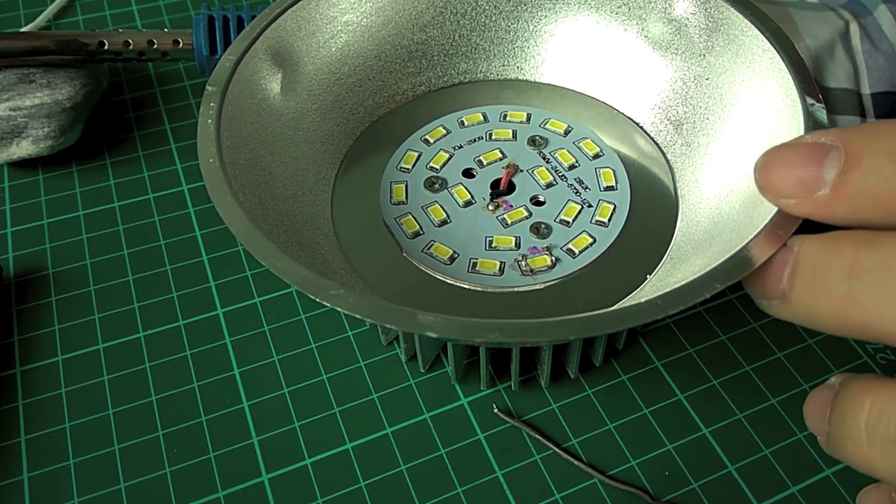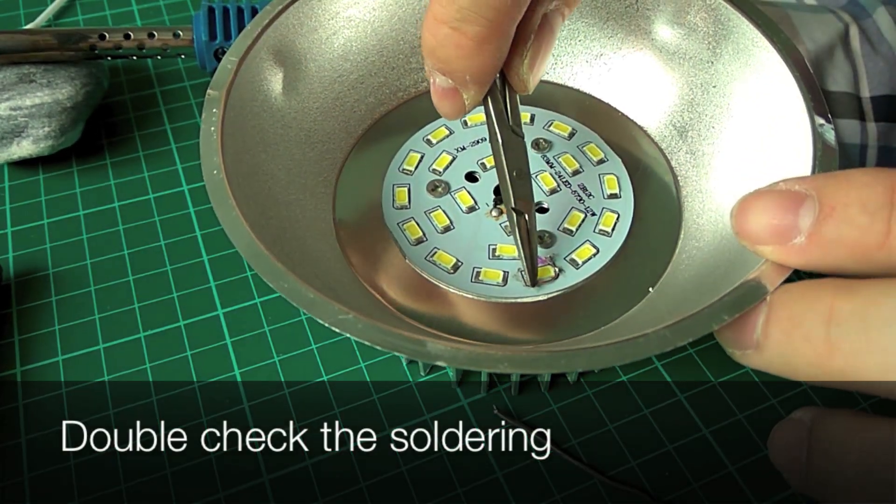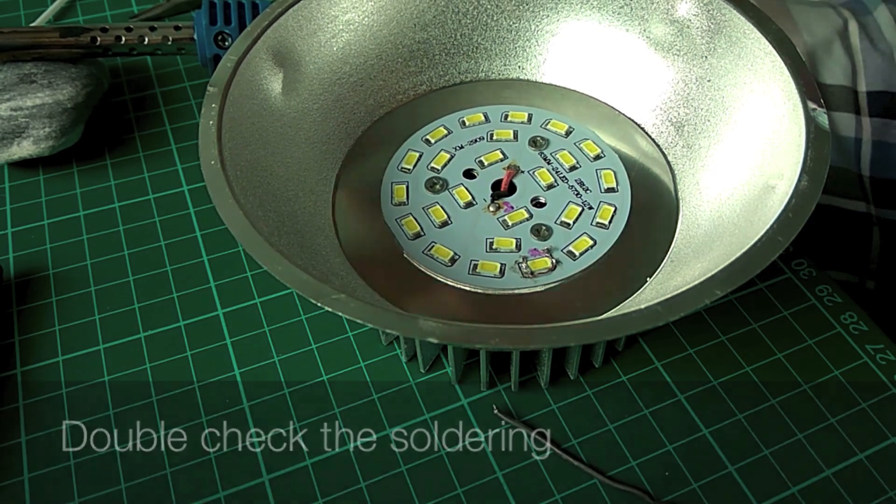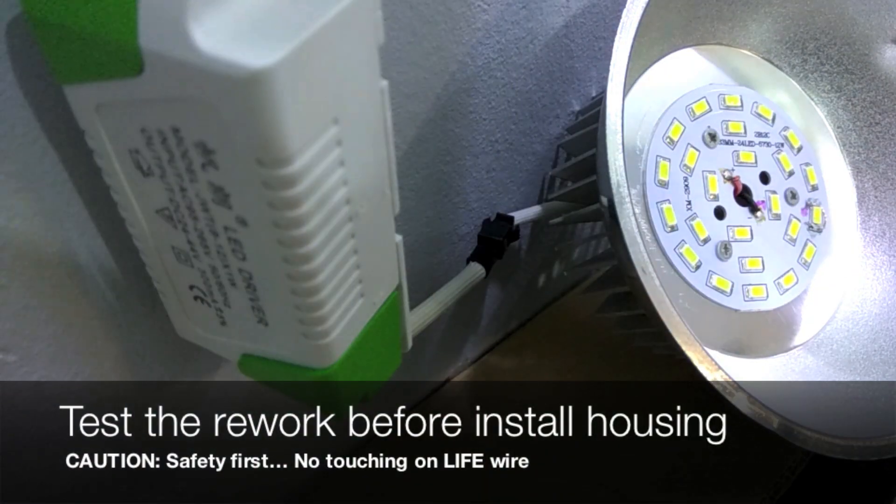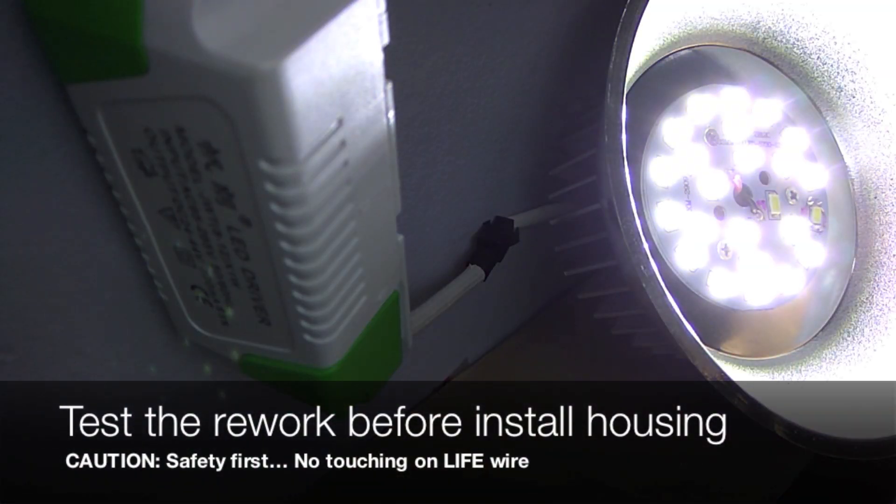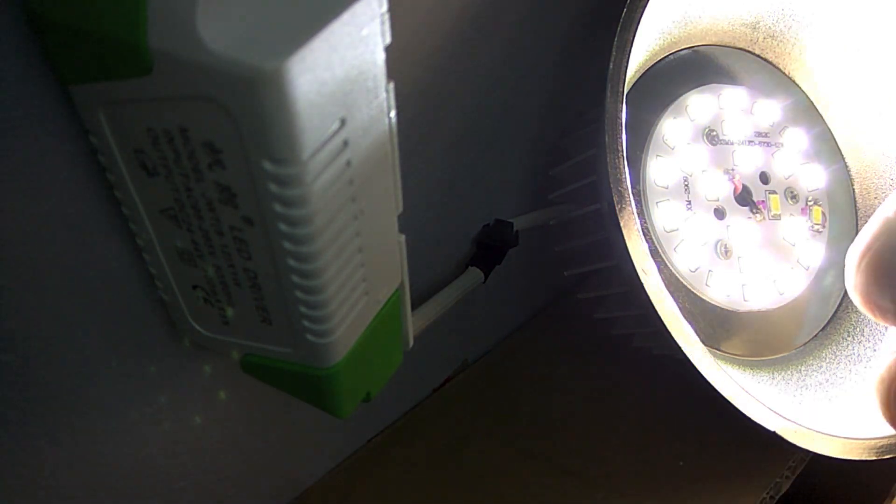To check, you can use a pin to wiggle it to see it is tightly placed. Once the rework is done, test again before closing the housing.